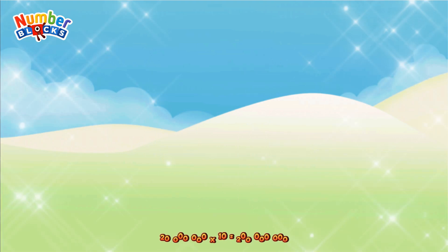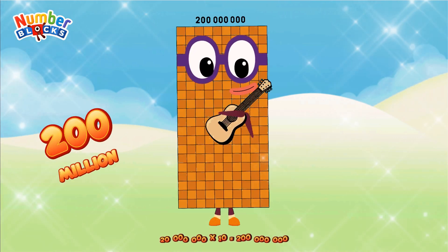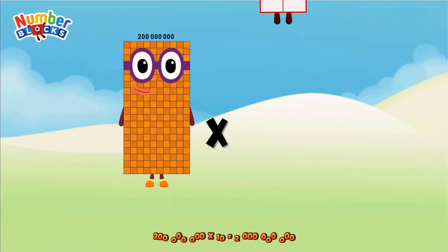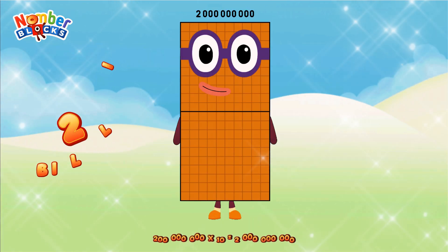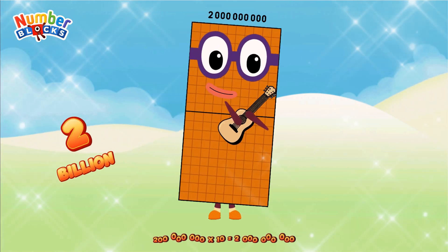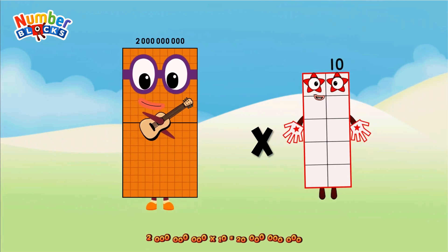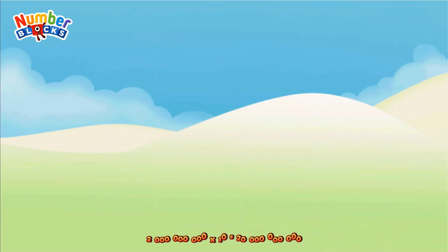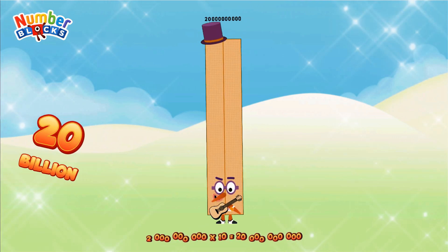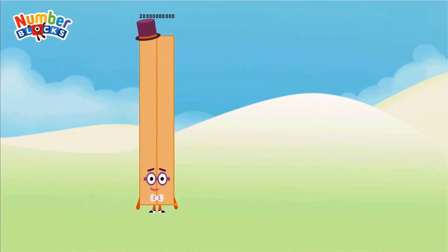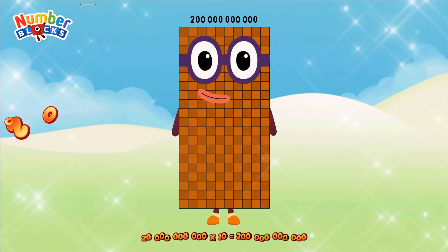200,000,000 x 10 equals 2,000,000,000. 20 Billion multiplied by 10 equals 200 Billion.